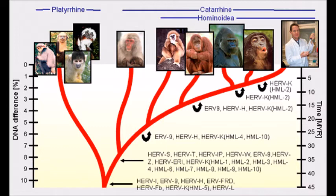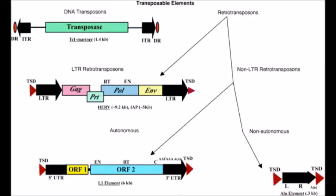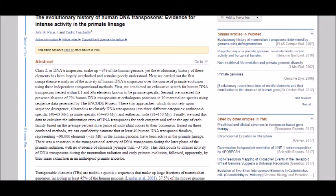What about transposons? Transposons, or transposable elements, are DNA sequences that can change their position within the genome. They can create or reverse mutations and can alter the genome's size. According to the 2007 paper, The Evolutionary History of Human DNA Transposons: Evidence for Intense Activity in the Primate Lineage, humans share 40 DNA transposon families with all other primates. Is this a third coincidence?